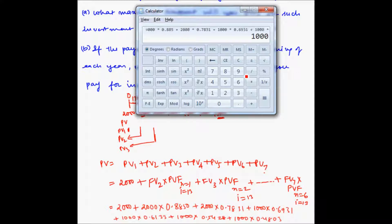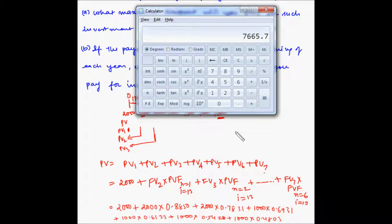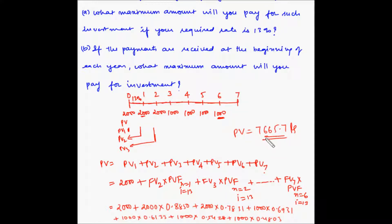The overall present value calculation is: 2,000 + 2,000 × 0.8850 + 2,000 × 0.7831 + 1,000 × 0.6931 + 1,000 × 0.6133 + 1,000 × 0.5428 + 1,000 × 0.4803. The answer is a present value of rupees 7,665.7. So this amount, when invested today at 13% interest per annum, can generate this series of cash flows received at the beginning of each year.